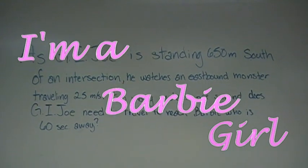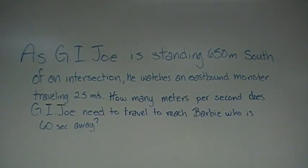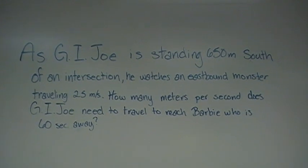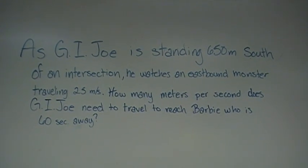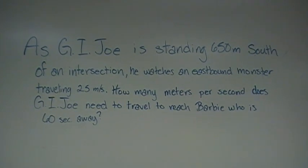Joe was standing 650 meters south of an intersection, he watches an eastbound monster traveling 25 meters per second. How many meters per second does G.I. Joe need to travel to reach Barbie who's 60 seconds away? Hello everybody, and welcome to I'm a Barbie Girl in a Calc World.